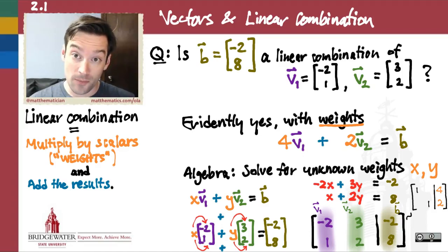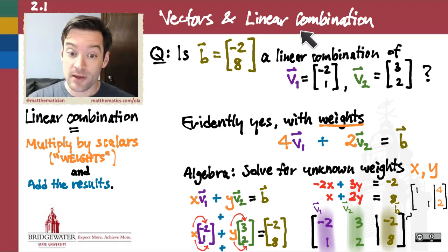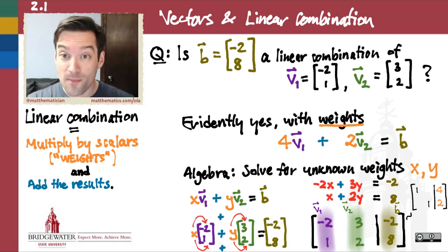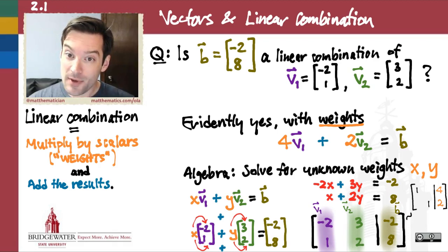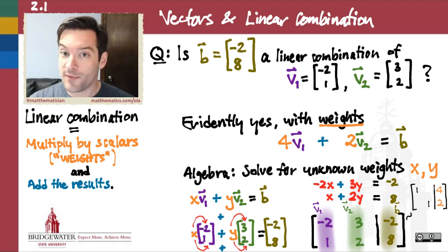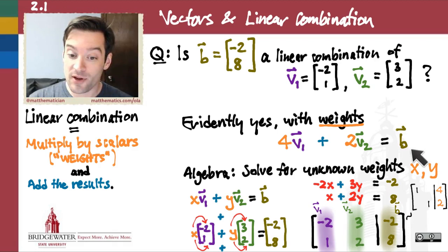We've seen the central role that linear combinations play in linear algebra. After all, linear combination is the operation that makes vectors vectors. And vectors are the main objects we study in linear algebra, regardless of what form we might meet them in. Linear algebra is about solving linear systems because solving linear systems is about discovering which linear combinations of a given set of vectors produce another given vector.